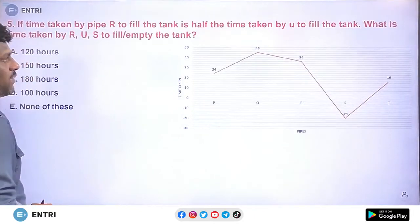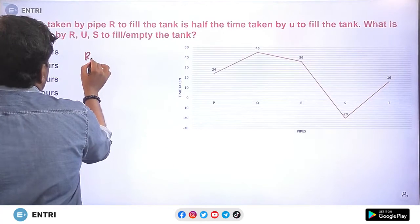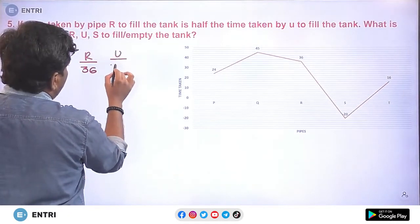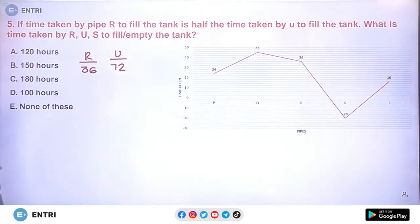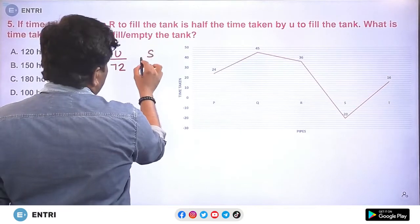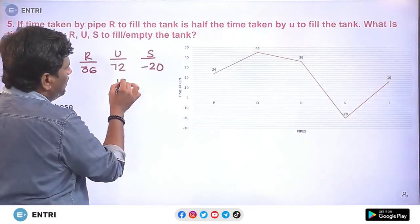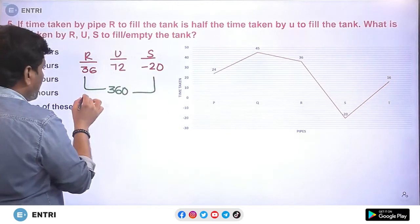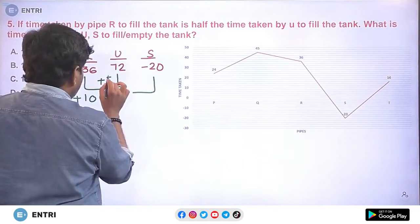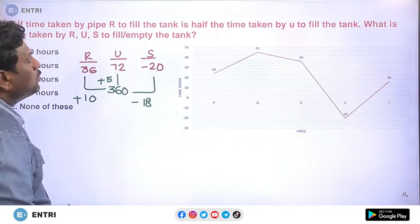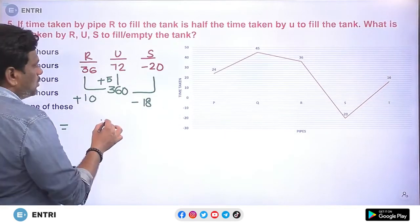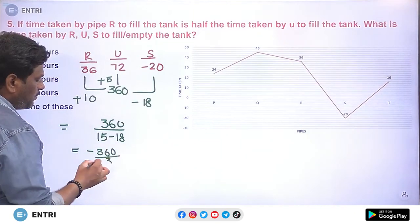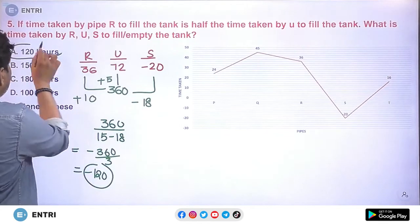Question 5: If the time taken by R and U and S to fill or empty the tank — S is already minus 20 (outlet). LCM is 360. R's efficiency is plus 10, U's efficiency is plus 5, and S's efficiency is minus 18. Net efficiency: 10 plus 5 minus 18 equals minus 3. Total work is 360. Time equals 360 divided by 3 equals 120 hours to empty the tank. Fill and empty represent the same volume of work — filling is positive and emptying is negative. Option D, 120 hours to empty, is the right answer.